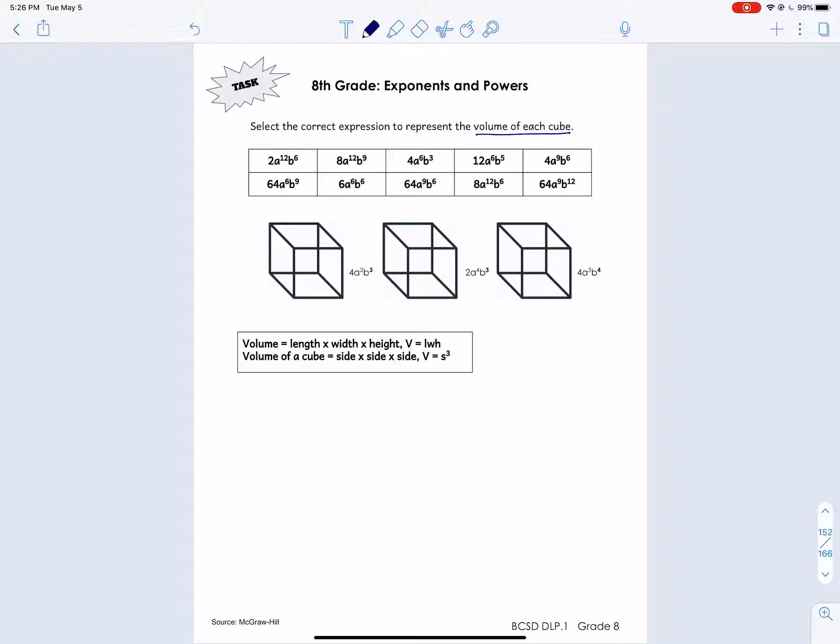So the expression that matches the volume with the cube that it goes with. I'm going to figure out the volume first and then take a look at the numbers. So this first one, I'm just going to call this A, B, and C. For A, we're talking about volume now. It gives us a little hint. Volume is length times width times height. But for a cube, it's basically the side to the third power. So you can think of it as the side times itself three times, or we can use an exponent to show that.